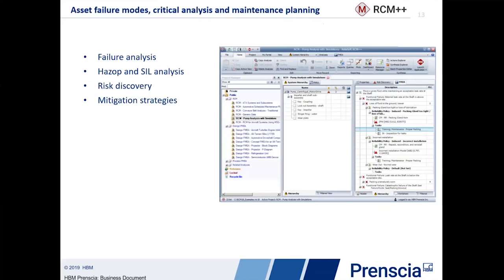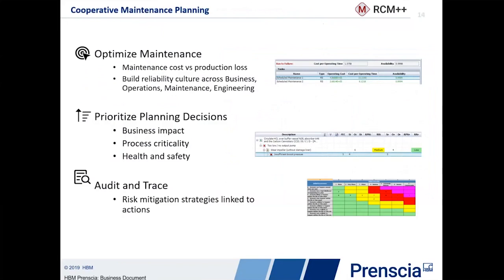We also have a separate risk discovery process to make it a little simpler. You can perform a preliminary screening of the risk associated with failures in this particular piece of equipment. From the point of view of maintenance, it helps to optimize the maintenance. We can actually look at the maintenance cost and compare that to the production loss that may happen if we let the component fail. Going through an RCM analysis allows you to invite business, operations, maintenance, and engineering people together, and you can really involve them in the culture of reliability and help them decide what should be done.